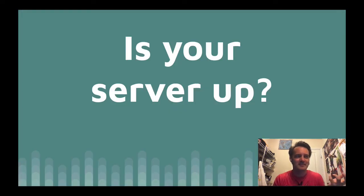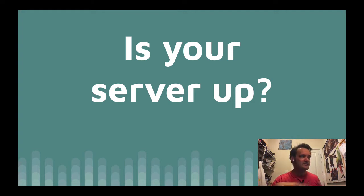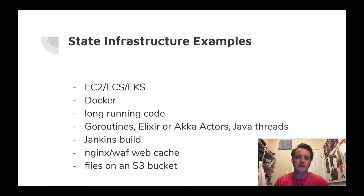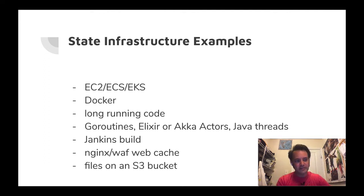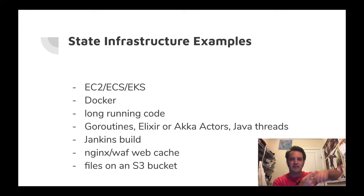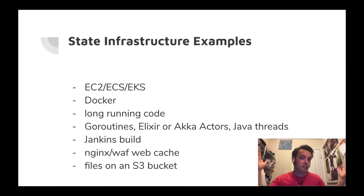When we say what is state from an infrastructure perspective, we mean things like: is your server up? Is your Docker container up? Is your cluster healthy? Are you monitoring it? Is Datadog looking at it? EC2, ECS, or EKS - they have a lot of state. They manage EC2s, Docker containers on them, and the health of those systems, and they try to self-heal if Docker containers crash. From a Docker perspective, your Docker container could be good but the code is in a bad state, or the ECS agent isn't able to talk to Datadog for some reason. That's what we mean by state.